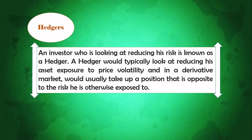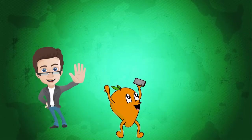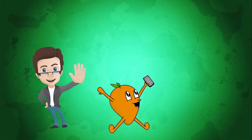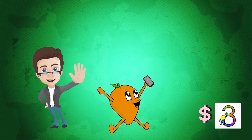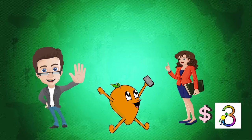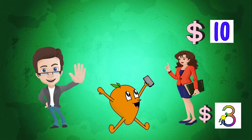Let's see the example. Ish is the co-founder of Eme Mango, where he produces mango juice. Currently the spot price, or current market price, of per kilo mango is $3. Ish meanwhile got a big order from a company — he'll have to deliver the juice after two months. On the other hand, Lita is the wholesaler from whom Ish purchases ripe mangoes. After two months, the price of mango is expected to rise up to $10 per kilo.